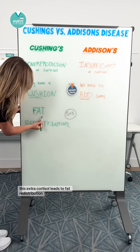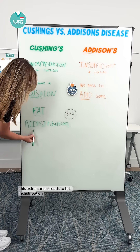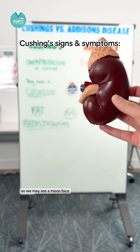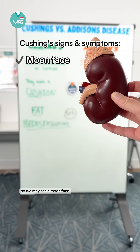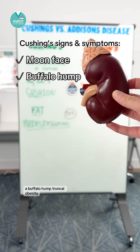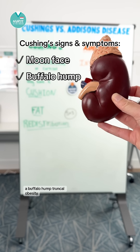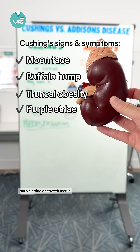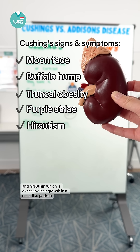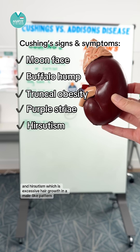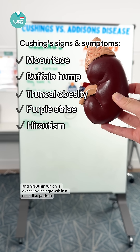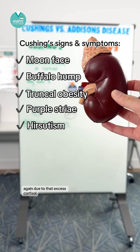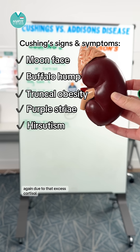When talking about signs and symptoms of Cushing's, this extra cortisol leads to fat redistribution. So we may see a moon face, a buffalo hump, truncal obesity, purple striae or stretch marks, and hirsutism, which is excessive hair growth in a male-like pattern, due to that excess cortisol.